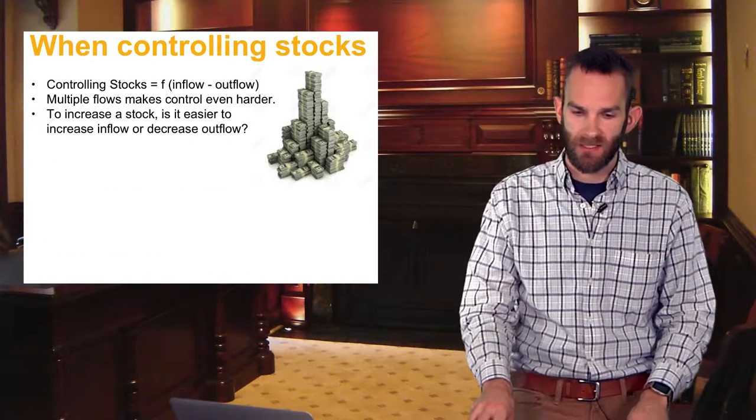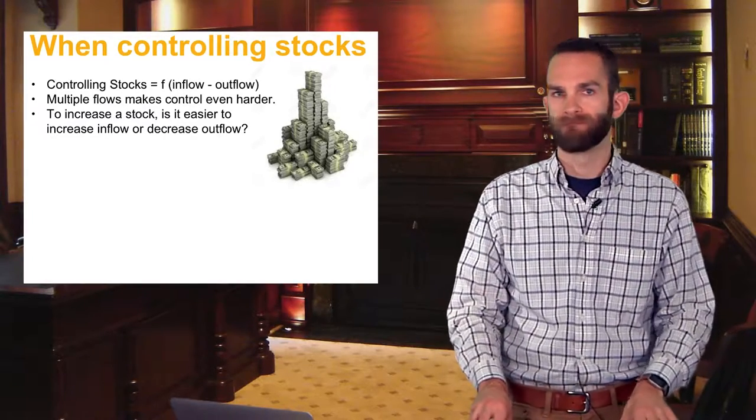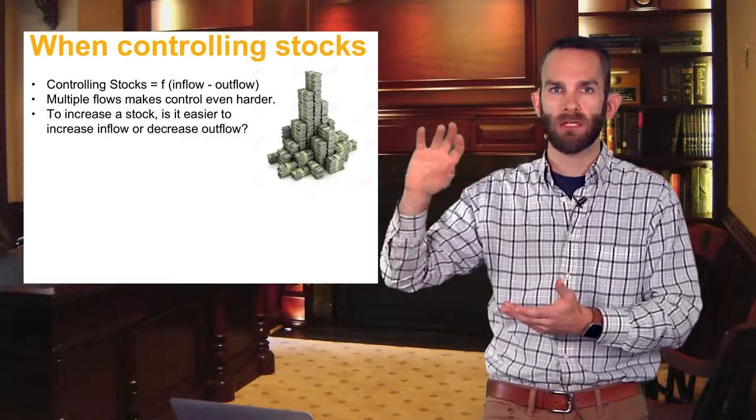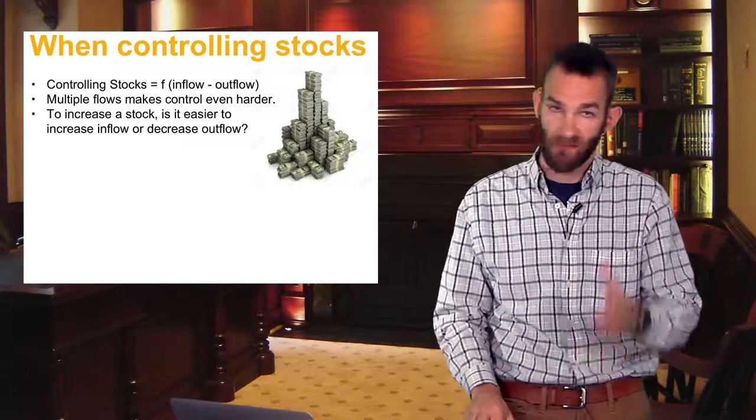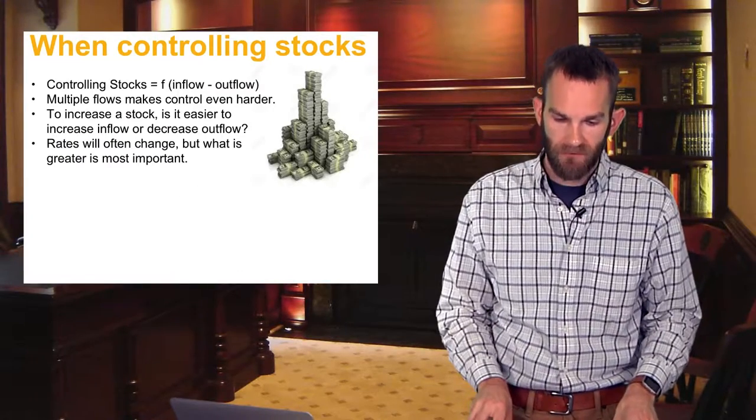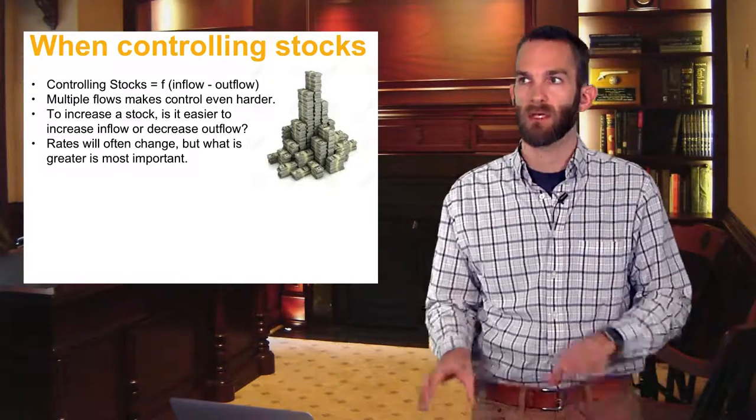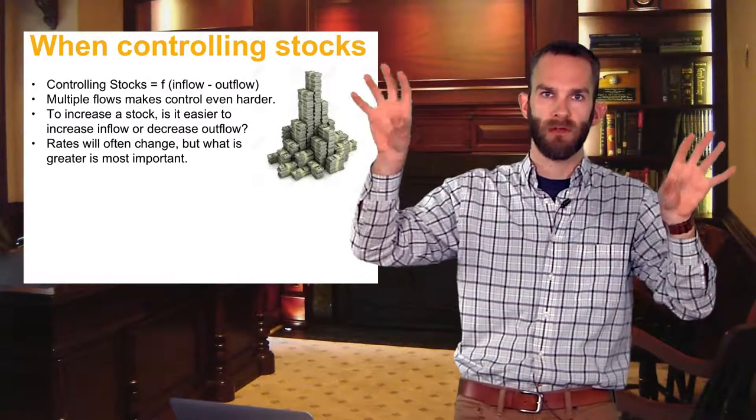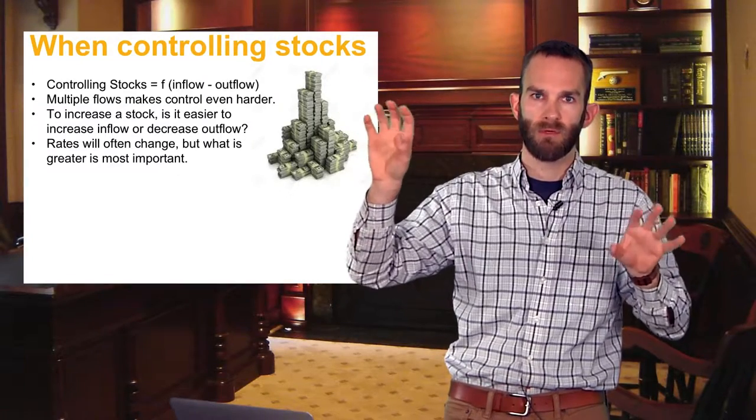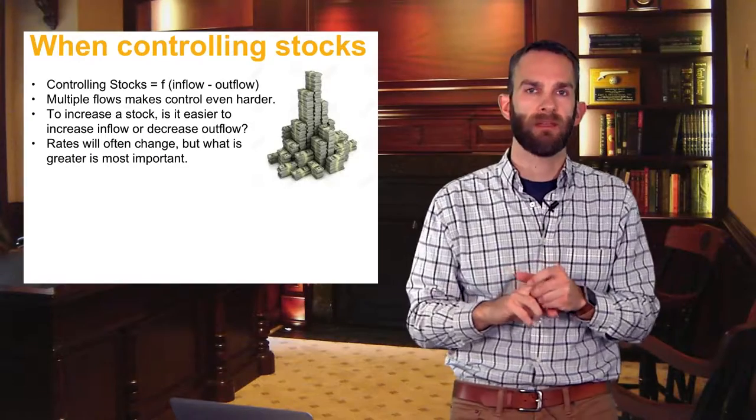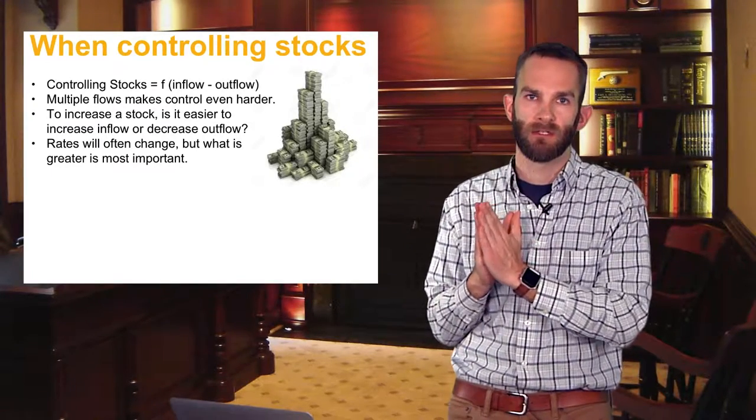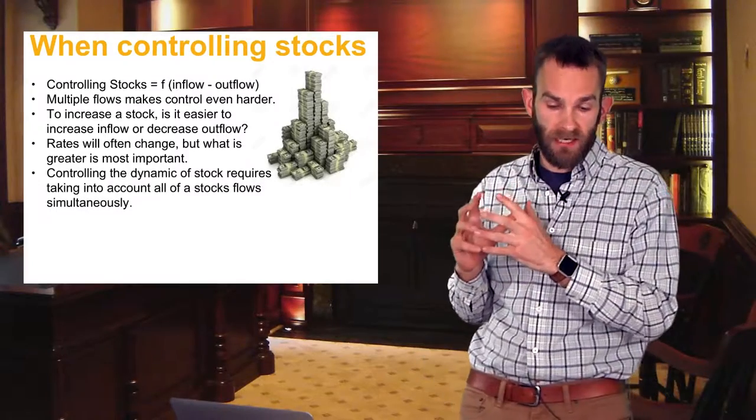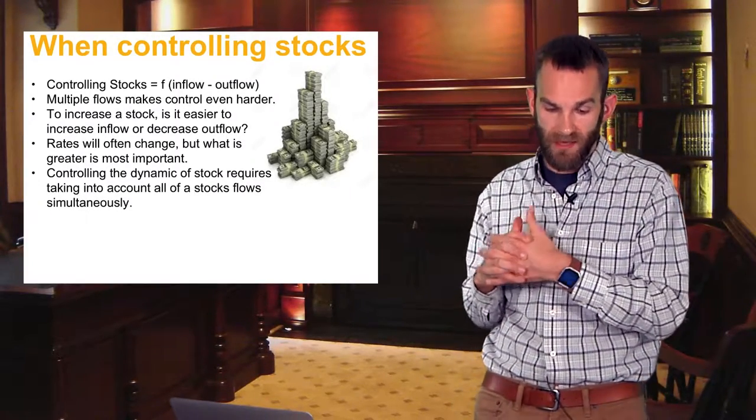To increase stock, is it easier to increase inflow or decrease outflow? So, if you want to have power, do you have it up front? For instance, buying more energy or is it easier to make your house more energy efficient? That's for you to decide. Rates will often change, but what is greater is most important. So basically, are we having a lot of something or a little bit of something? Or is there a lot of outflow or a little bit of outflow? Like whatever variable, auxiliary variable is greater. That one needs to command your attention. You need to pay attention to the one that has most influence. There's no sense spending a lot of time on an inflow if that's small and your outflow is great. Pay attention to the one that's having greater behavior change on your stock.